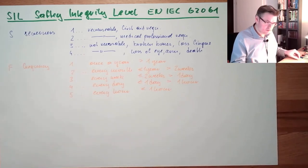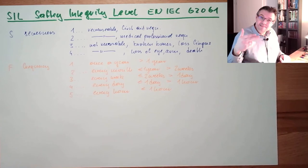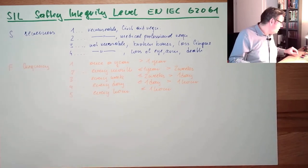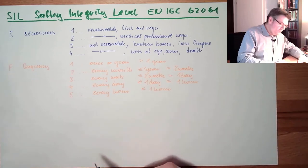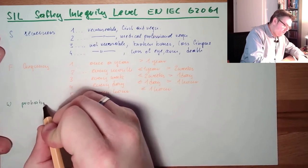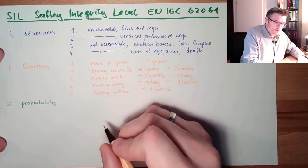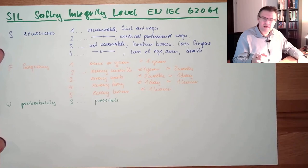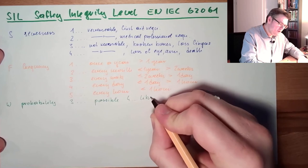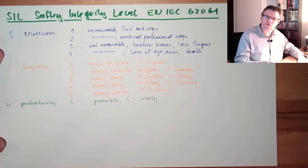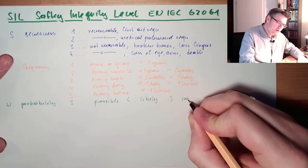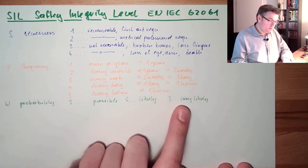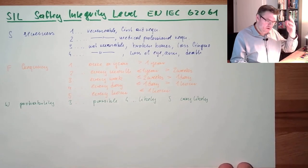Those are the frequency categories. Then there is the Probability W — how likely this danger will actually occur. The frequency is how often you are exposed; the probability is how often the hazard really appears. W = 3 means it is possible, not very likely but possible. W = 4 means it is likely — you will see it. W = 5 means very likely — there is only a small chance it will not appear.